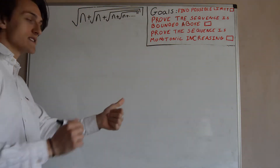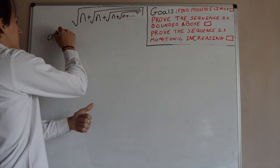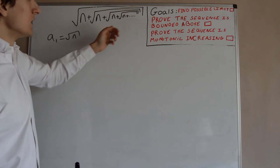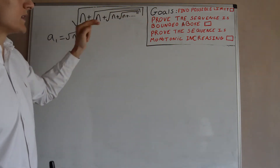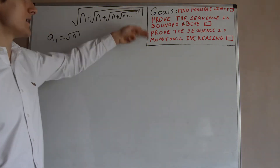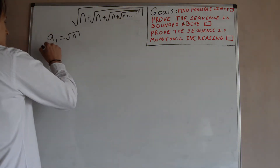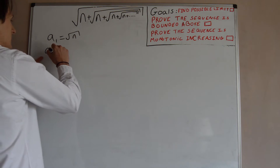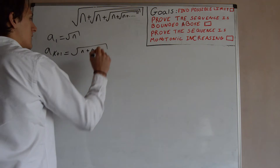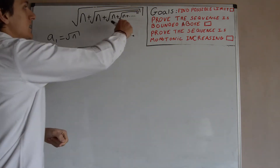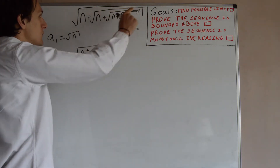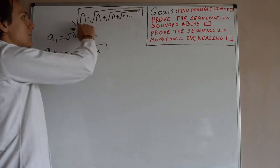What do we need for a recurrence relation? We need the first term. So I'm just going to define a₁ to be the square root of n. You could define a₁ differently — it would actually still work; you just might have to prove that the sequence is bounded below or monotonically decreasing. Then we're going to define aₖ₊₁ to be the square root of n plus aₖ, because from the picture we have this thing, then we add n and take the square root, then we have this thing and add n and take the square root, and so on.